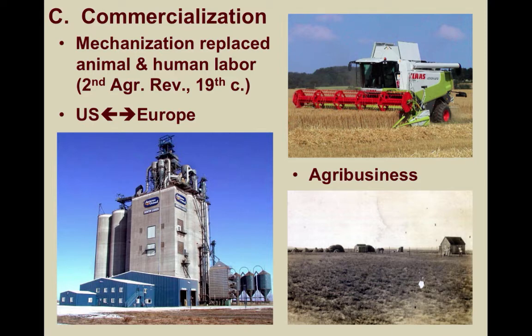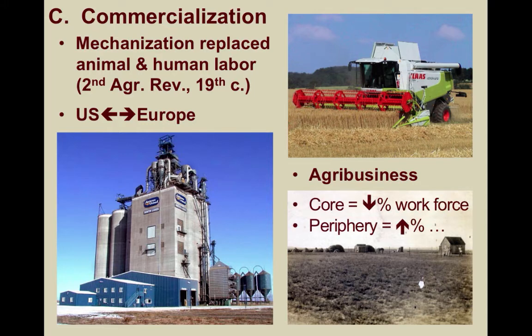This is a far cry from the family-owned farms of the past. However, most farms in Africa and South, East, and Southeast Asia are still relatively small and often privately owned or run. This helps explain why core countries have such a small percentage of the workforce involved in primary activities, whereas peripheral countries have much larger percentages involved in primary activities.